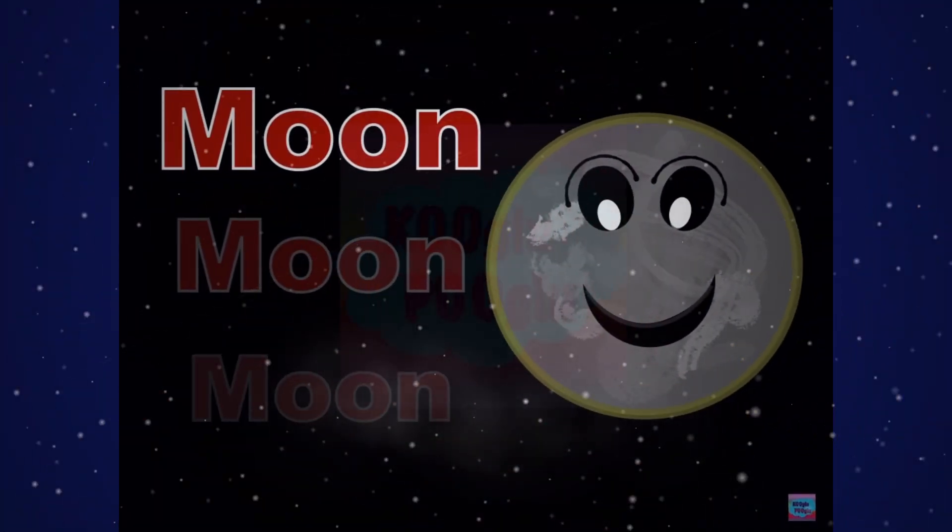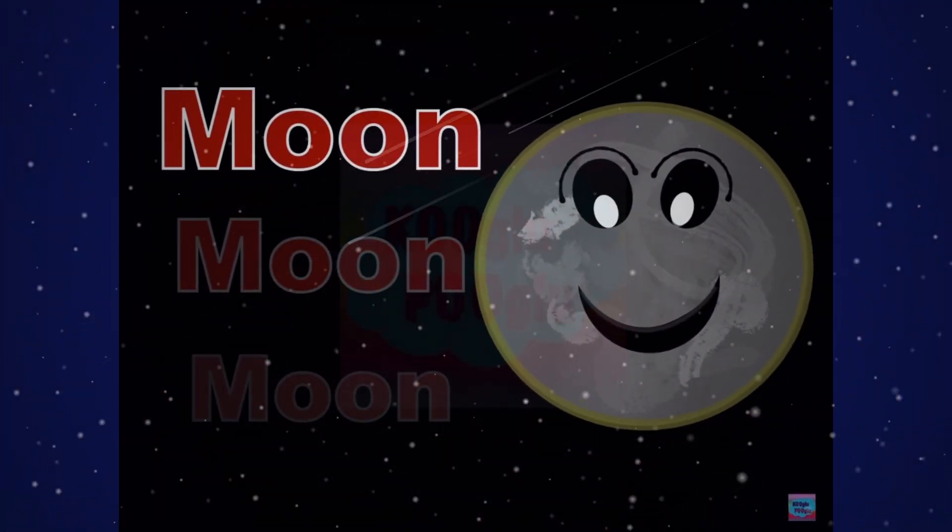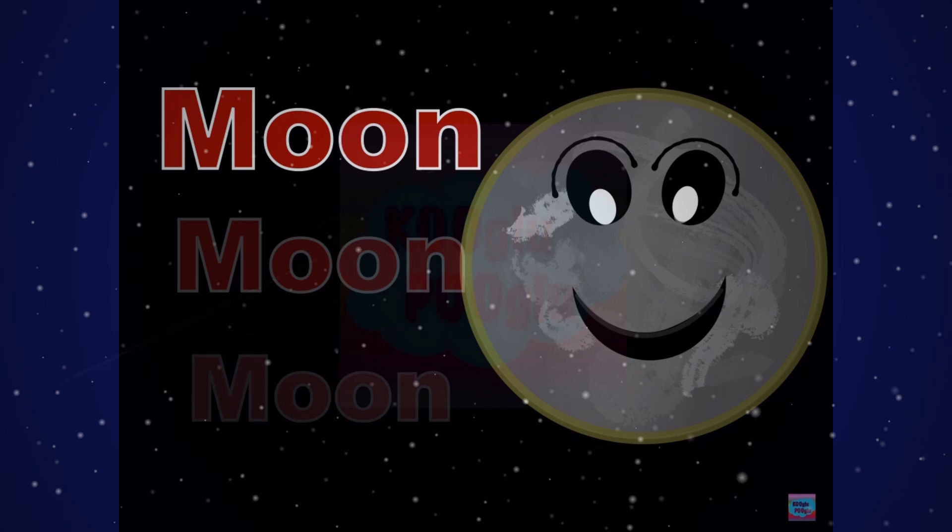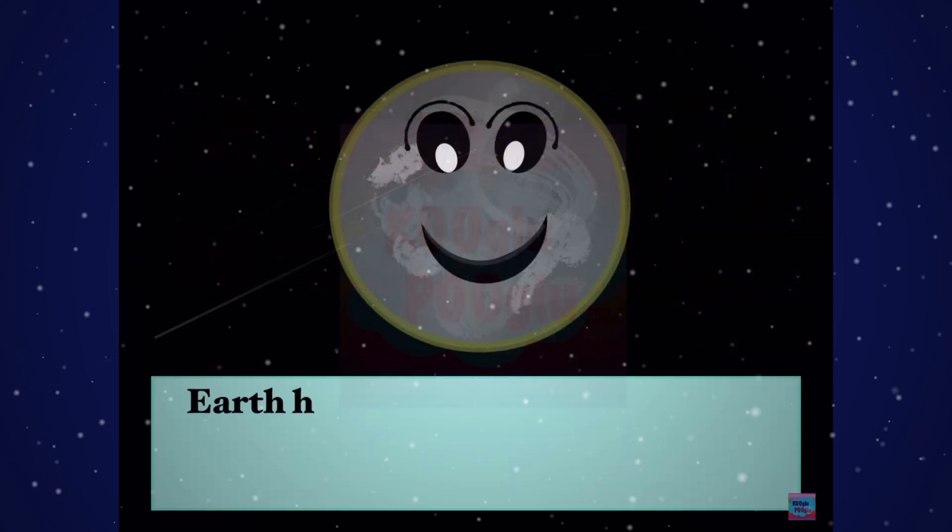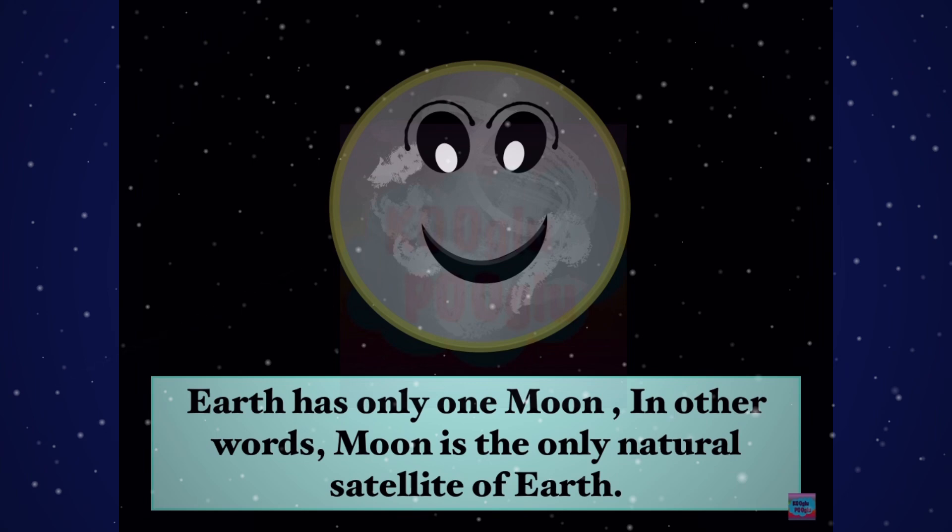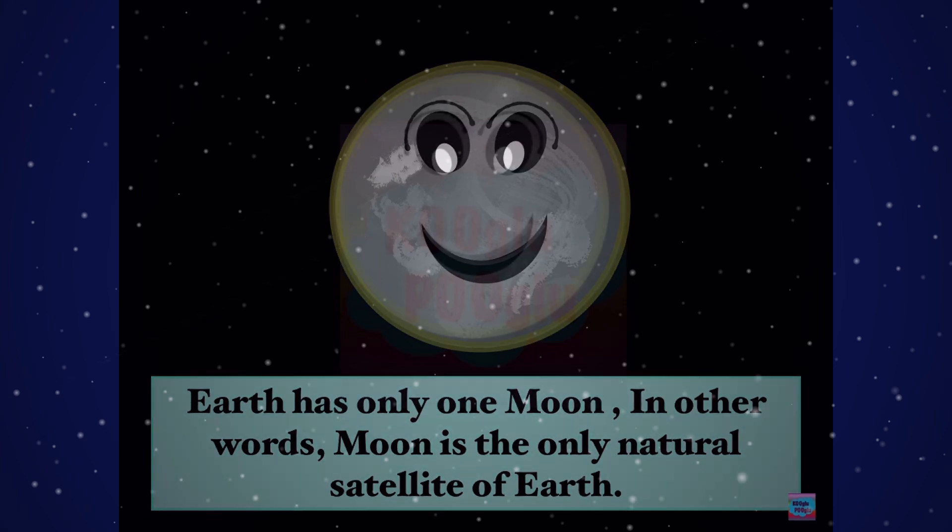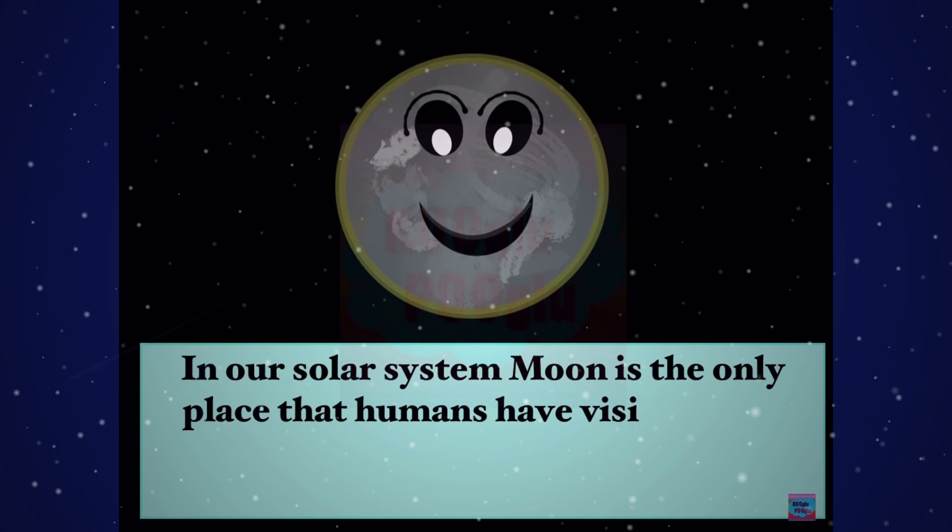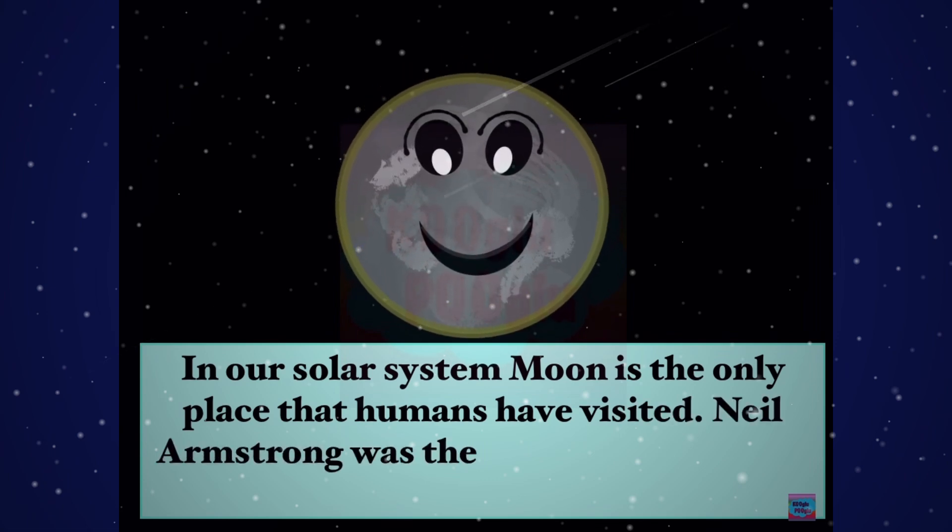Hey guys, today we're going to learn about Mother Earth's best friend, the Moon. Don't forget to watch my previous videos - the link is in the description below. Earth has only one moon. In other words, the Moon is the only natural satellite of Earth in our solar system. The Moon is the only place that humans have visited. Neil Armstrong was the first human to walk on the Moon.